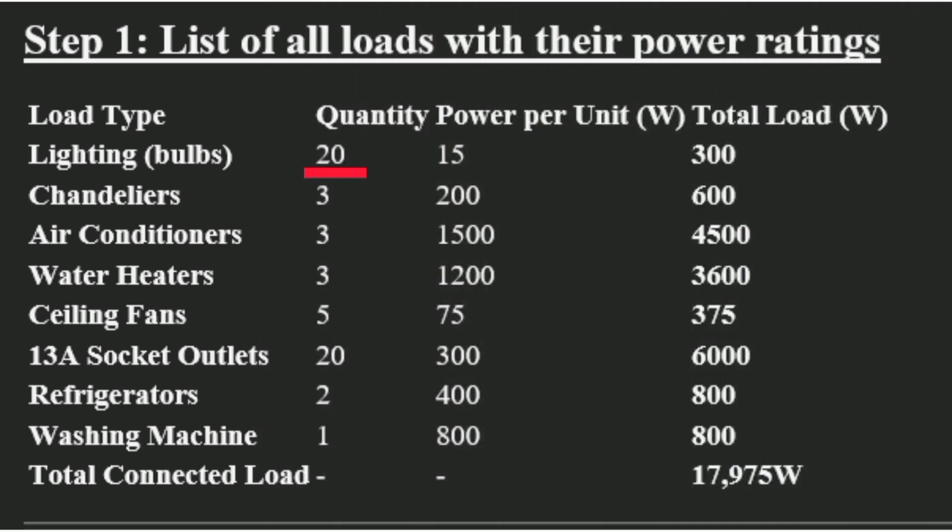In the wiring we have 20 lights, three chandeliers, three air conditioners, three water heaters, five ceiling fans, 20 socket outlets, three refrigerators, and one washing machine. These are the things we are going to install in the wiring. The number of lamps is 20.